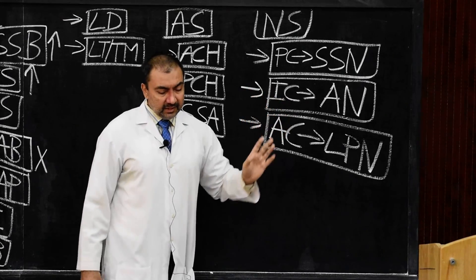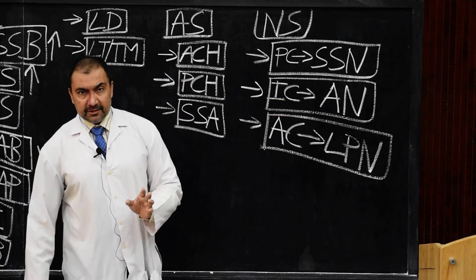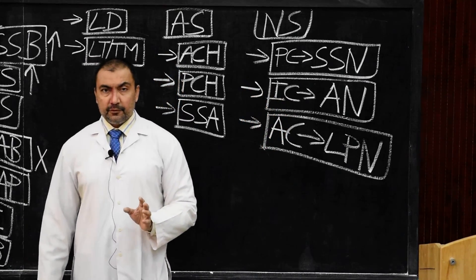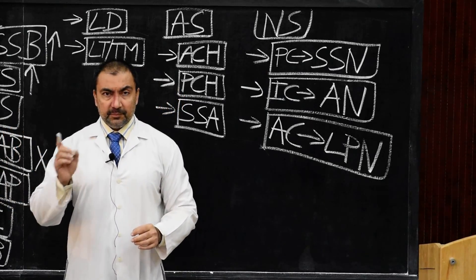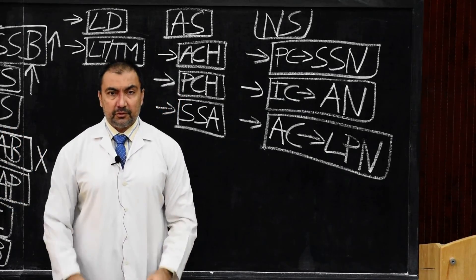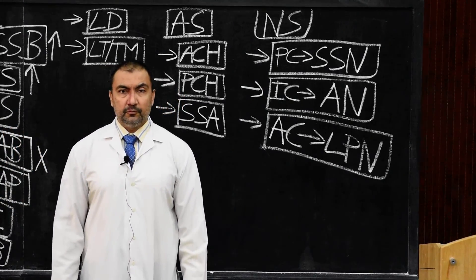Here we finish for today: the relations, the bursae, the arterial supply, and the nerve supply of the shoulder joint. Thank you very much.